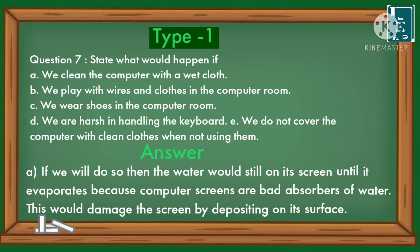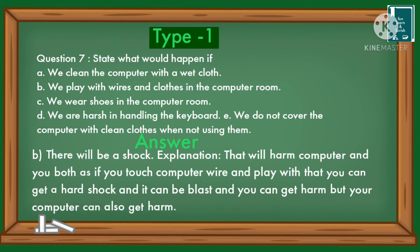Question: What would happen if we clean the computer with a wet cloth? If we do so, the water would sit on the screen until it evaporates, because computer screens are bad absorbers of water. This would damage the screen by depositing water on its surface.